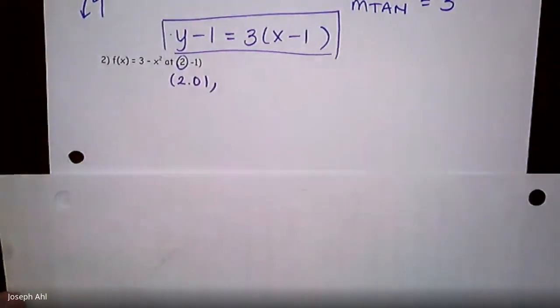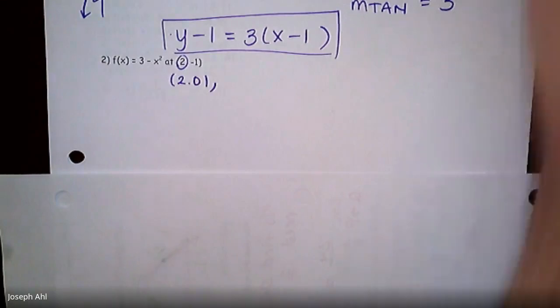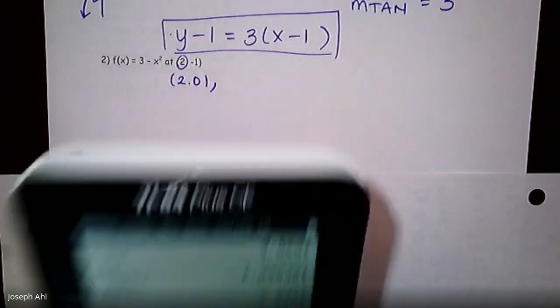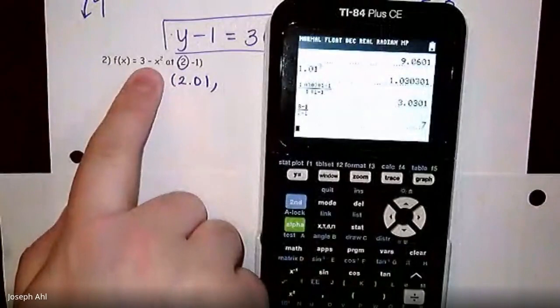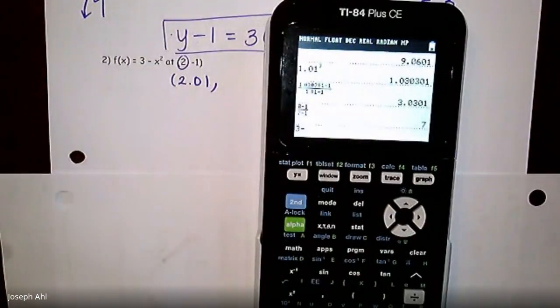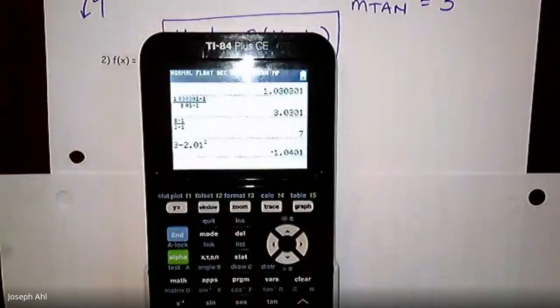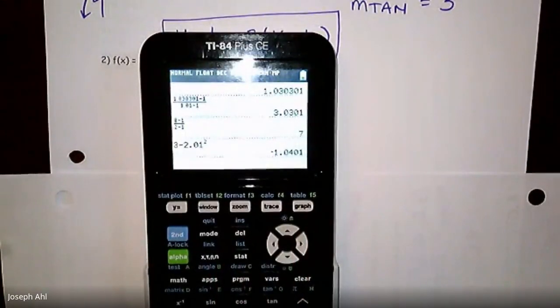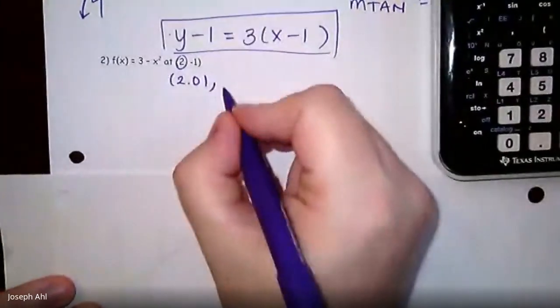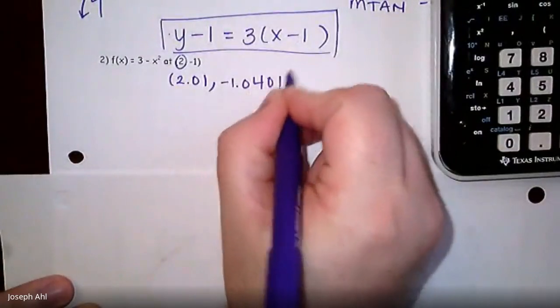Pick a value 1 100th away. Could I have chosen 1.99? Absolutely, right? You would get the same desired result if you go 1 100th just to the left of that point. So let's see, if I plug that into the function, we have to do 3 minus 2.01 squared. So the y value on this function is negative 1.0401.